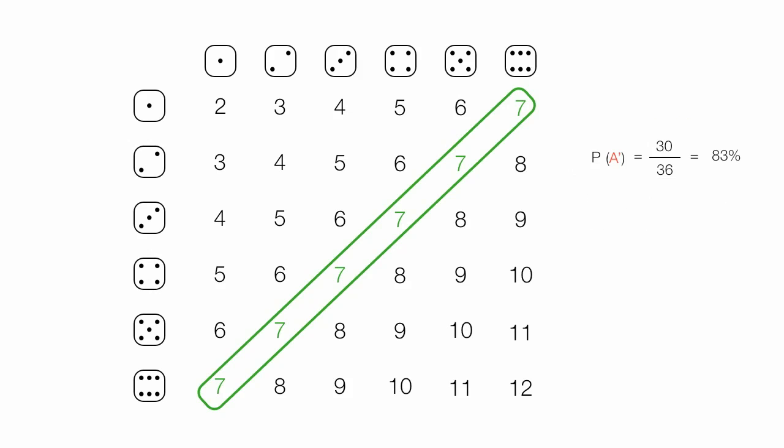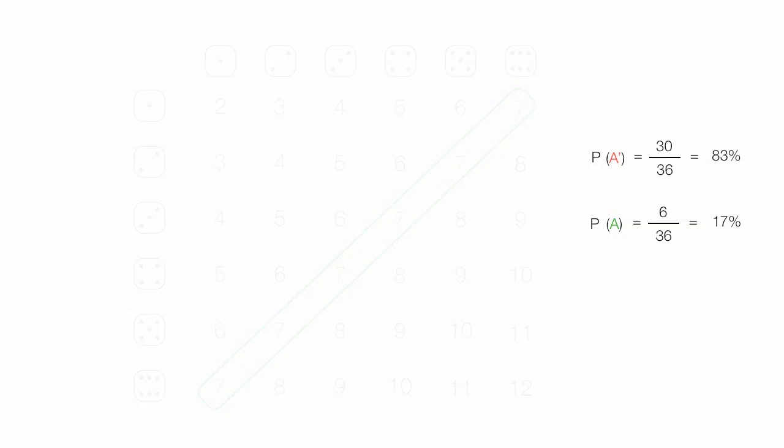So I have the probability of event A, which is 6 over 36, or about 17%. And I add it to the probability of the complement of event A. The probability of event A plus its complement is equal to 36 over 36, which equals 100%. So the probability of an event A plus its complement is always 100%.